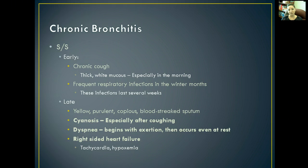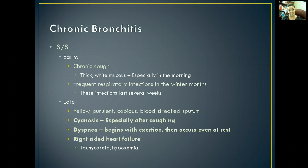With early disease, you're going to notice a chronic cough first. Typically you'll notice some thick white sputum early in the morning — that may go away throughout the day, but every morning you might start noticing that thick white sputum. That's one of your first signs of chronic bronchitis. Frequent respiratory infections that last during the winter months can last several weeks up to a few months at a time in the early stages.